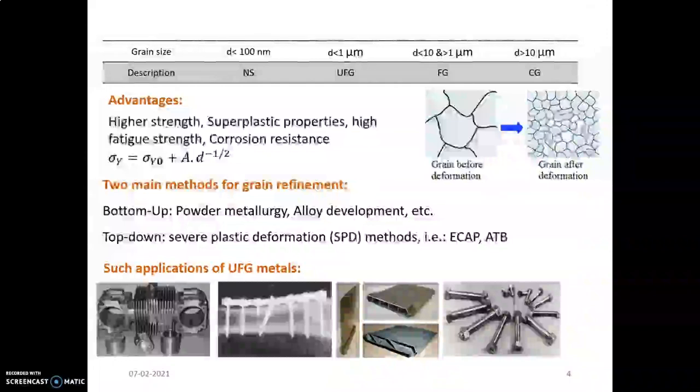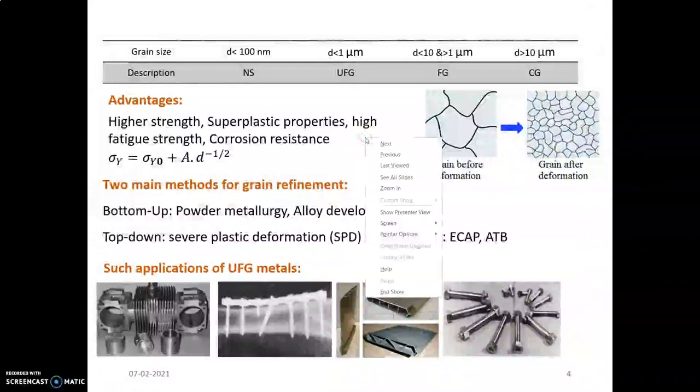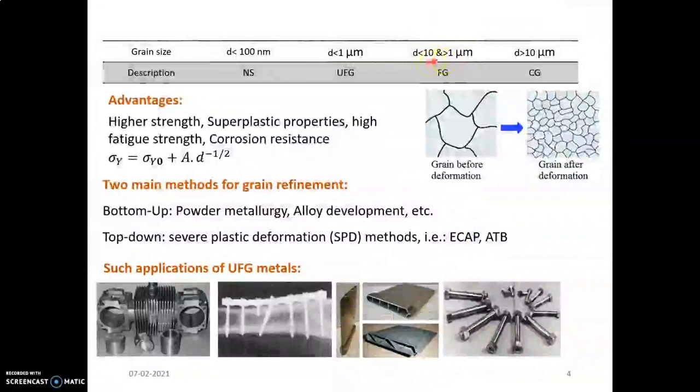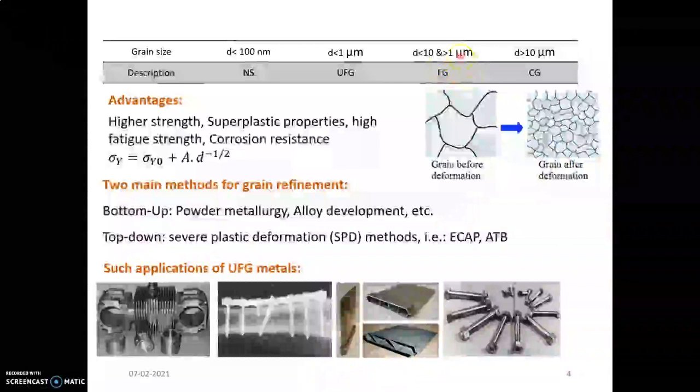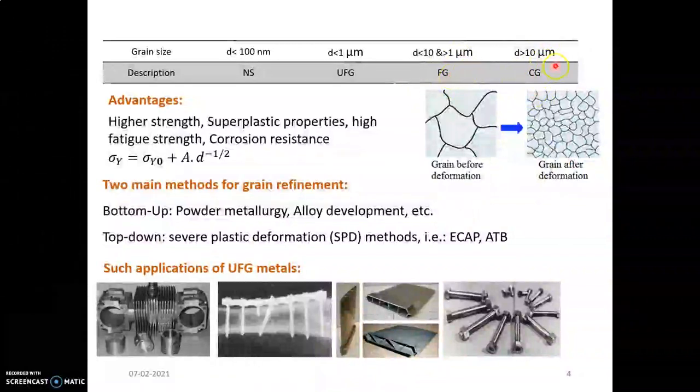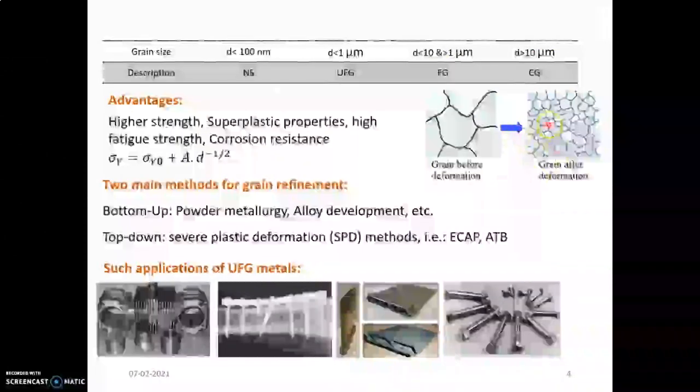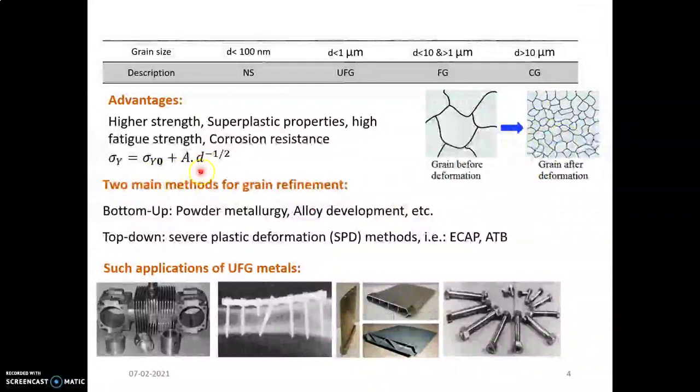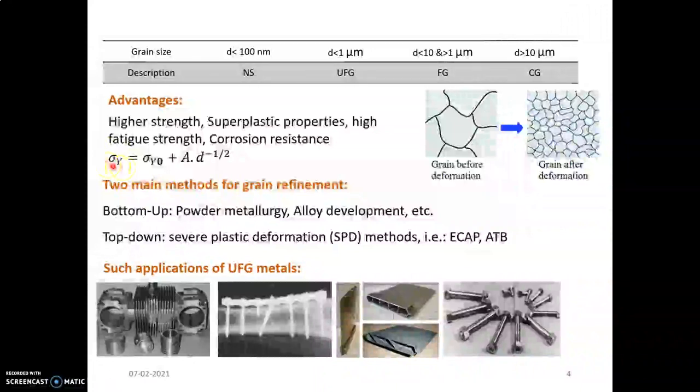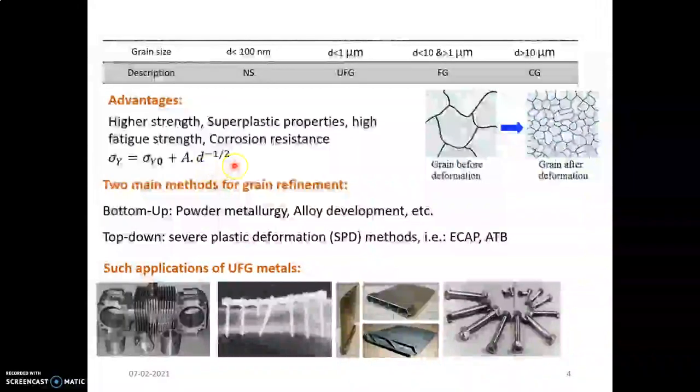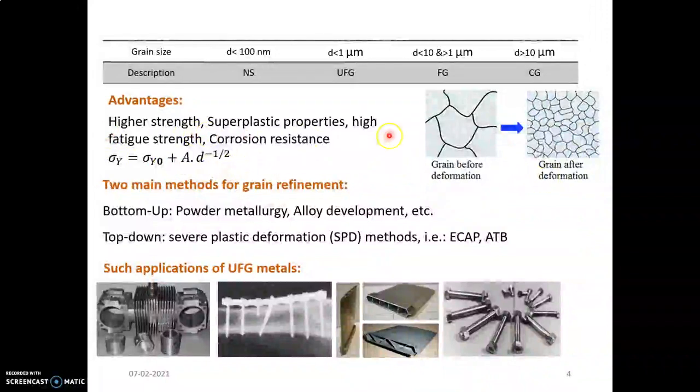If the grain size is greater than 1 micrometer but less than 10 micrometers, it is called fine grains. If it is greater than 10 micrometers it is coarse grain. You can see the grain before deformation and grain size after deformation becomes smaller. As the grain size decreases, yield strain increases. This is sigma y equals sigma y0 plus a constant times d to the minus one-half. Advantages of this process are high strain, superplastic properties, and corrosion resistance.